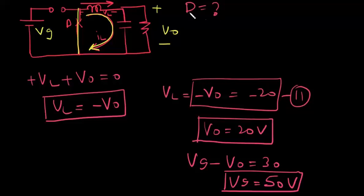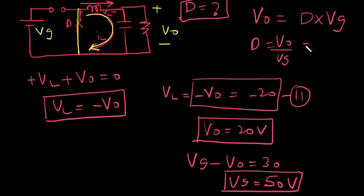So the question is asking for duty cycle. So for a buck converter operating in continuous conduction mode, V0 = duty cycle multiplied by VG. So D = V0/VG, or you can write 20/50, which comes to be 0.4. So the answer is D = 0.4.